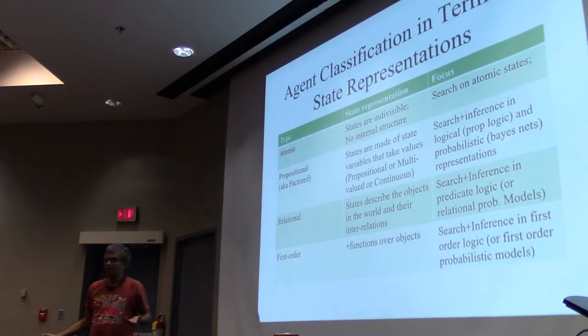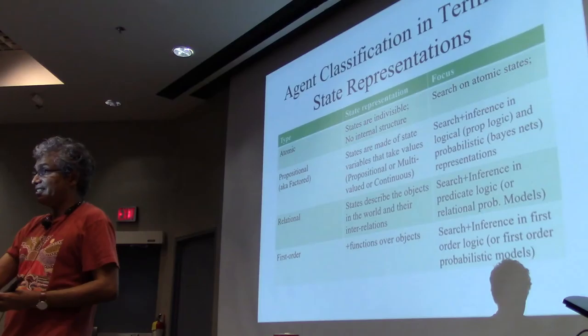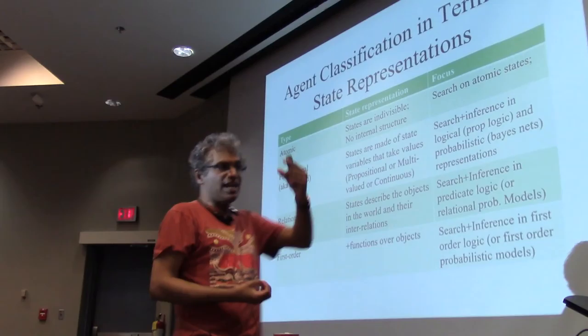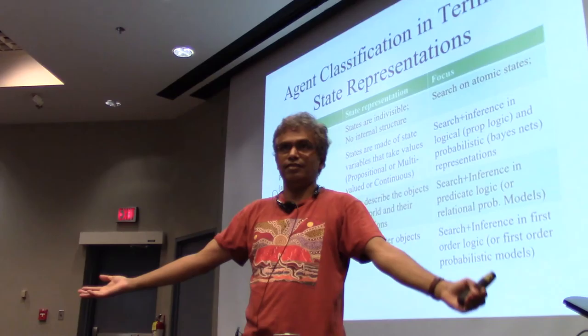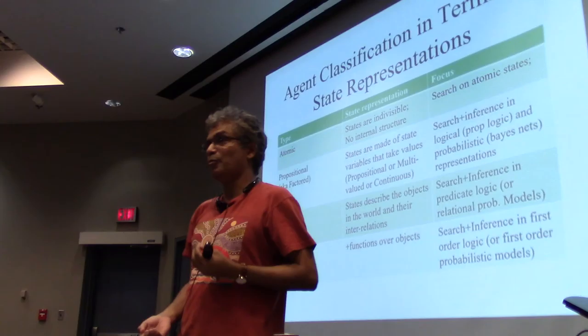Then we will go back to single-agent search and look at propositional representations. First we look at atomic representations where states are indivisible — state 59, state 75. The entire thing is one snapshot. Your program directly manipulates the states: it takes a state, generates more states, and a goal test takes a state and says yes or no.